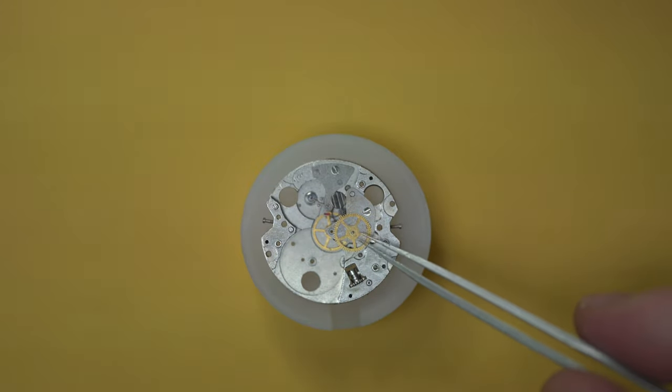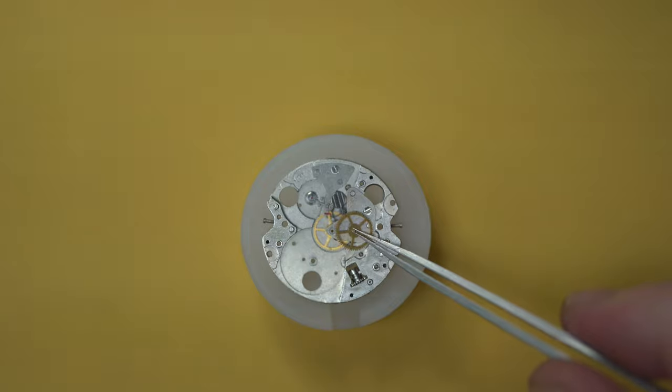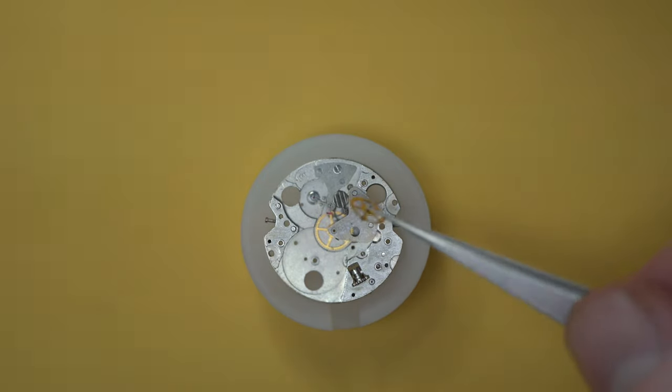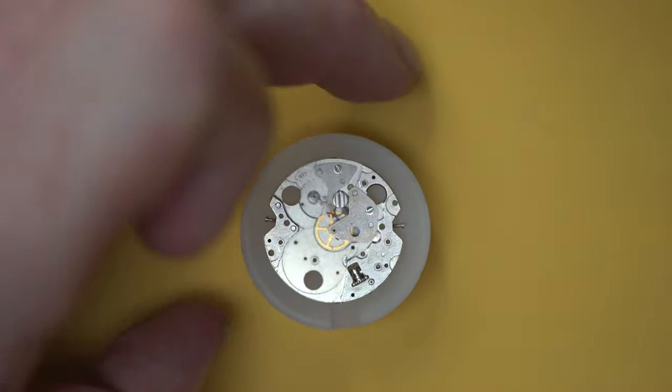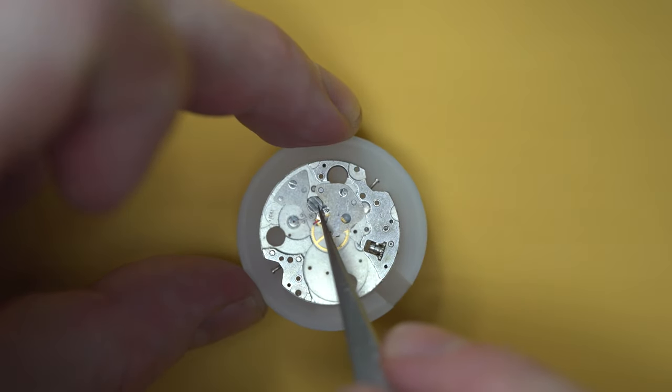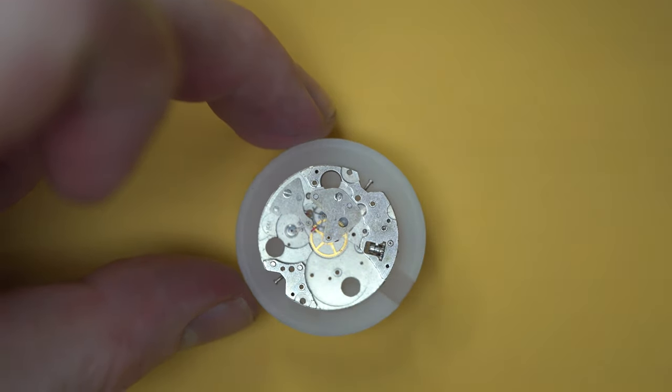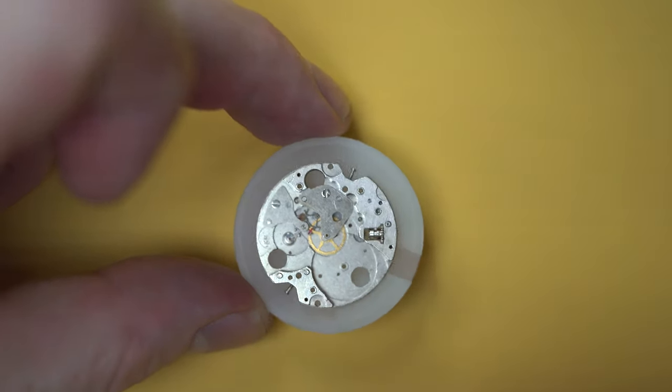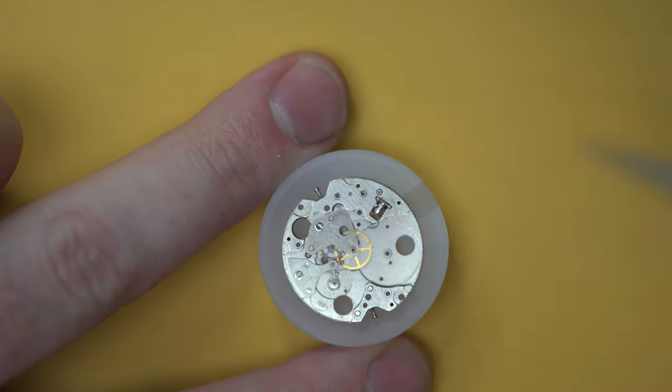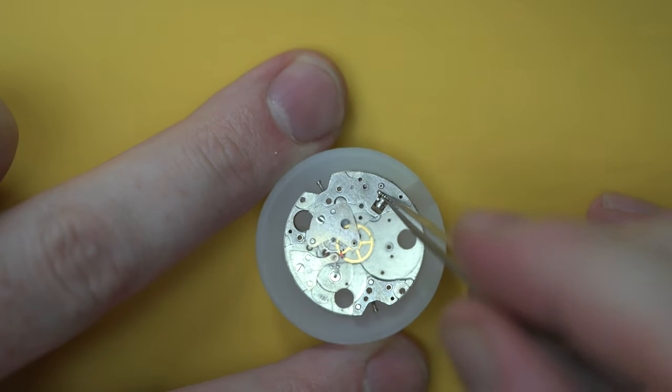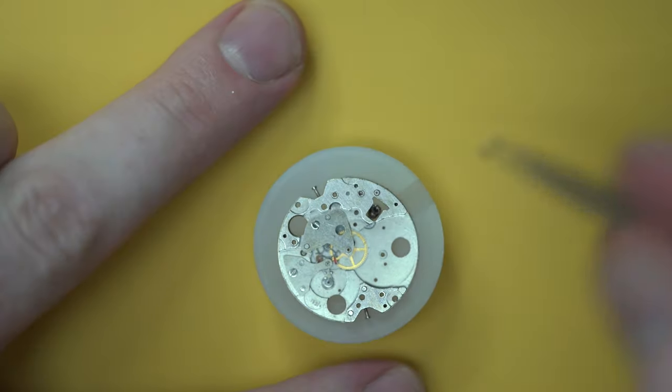So moving on from the keyless works, what we have now is the train of wheels. We got second wheel, third wheel and a center wheel here, which I'll take out in sequence. And then we have the crown wheel actually, when I took it off, it fell underneath. So that was actually the screw for the crown wheel. These two parts again, part of the keyless works.